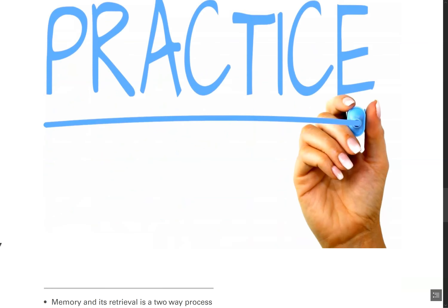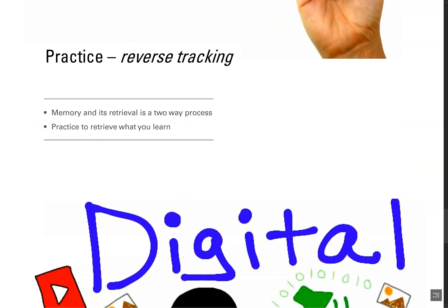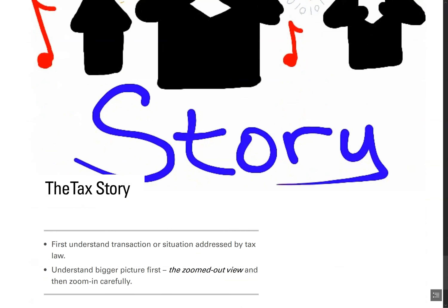Memory and its retrieval is a two-way process. Practice to retrieve what you learn. Tax law is about commercial scenarios. If you understand the relevant commercial situation or transaction, then tax law becomes very easy to understand. So first understand the transaction or situation addressed by tax law. Understand the bigger picture first — the zoomed out view — and then zoom in carefully.